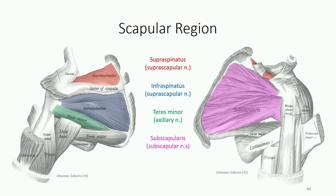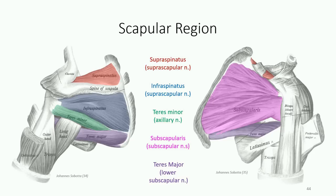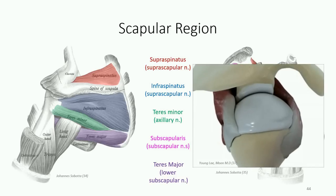The last of the rotator cuff group, subscapularis, originates off the anterior surface of the scapula, crossing anterior to the glenohumeral joint to insert on the lesser tubercle of the humerus. Because of this anterior course, the subscapularis is a medial rotator of the shoulder. Although not technically part of the rotator cuff, the teres major is also discussed here as one of the scapulohumeral muscles. It's the larger round muscle, originating off the inferior angle of the scapula and inserting on the medial ridge of the intertubercular groove, just inferior to latissimus dorsi. As it passes antero-inferior to the shoulder, it is an adductor and lateral rotator of the shoulder joint. Note the antagonistic actions of infraspinatus and teres minor versus subscapularis and teres major — one group contracts to laterally rotate the shoulder, the other medially rotates.